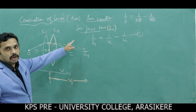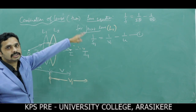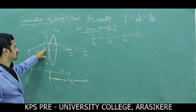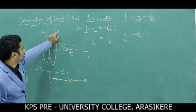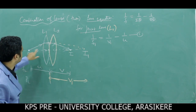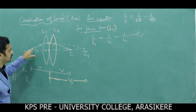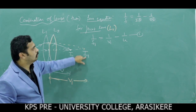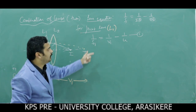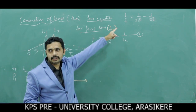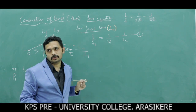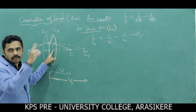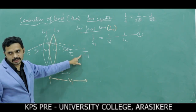To be clear: for the first lens in the absence of the second lens, O is the object and I1 is the image. Similarly, I am now applying the lens formula for the second lens.